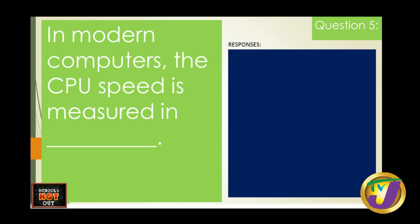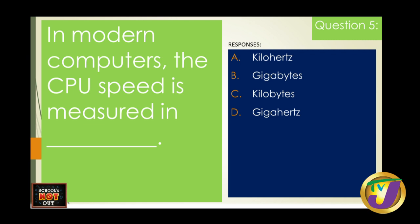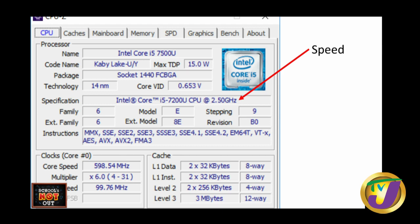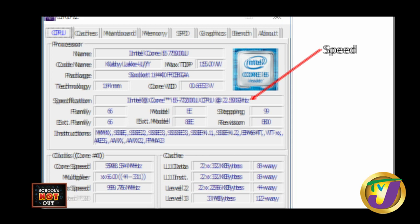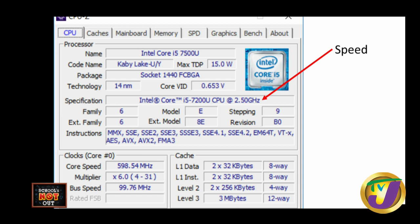Question five: in modern computers, CPU speed is measured in A) kilohertz, B) gigabytes, C) kilobytes, or D) gigahertz. The answer is gigahertz. We measure the speed of our CPU with the term gigahertz. For example, this Intel Core i5 has a speed of 2.5 gigahertz. You might ask why it's not measured in bytes or kilobytes like internet speed — let's explain.